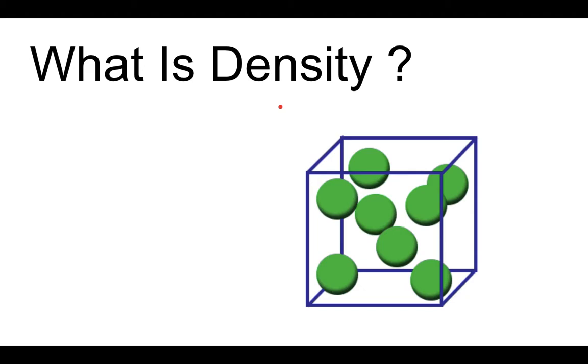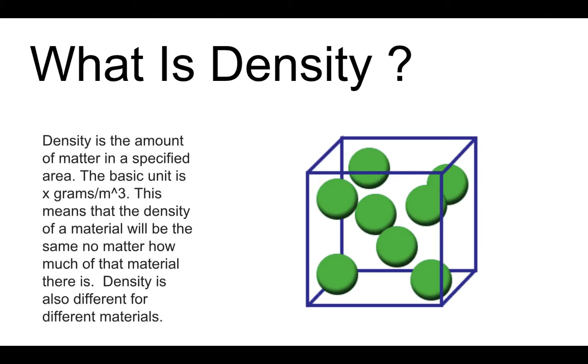First of all, what is density? Density is the amount of matter in a specified area. The basic unit for density is grams divided by meters cubed. This means that the density of a material will be the same no matter